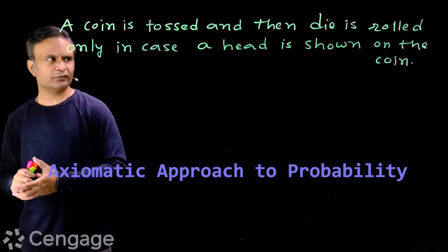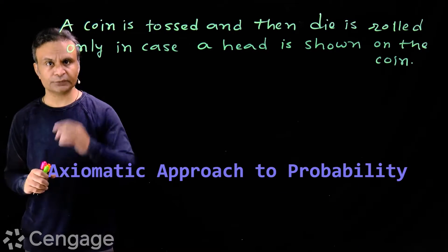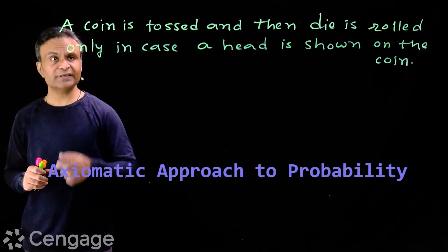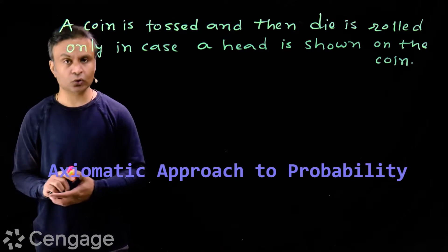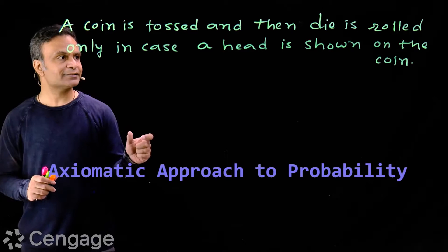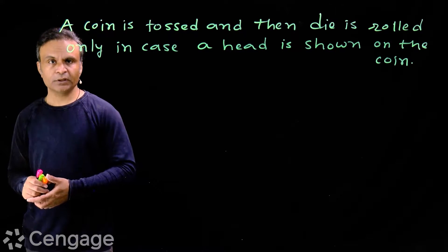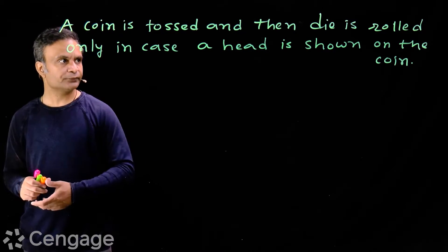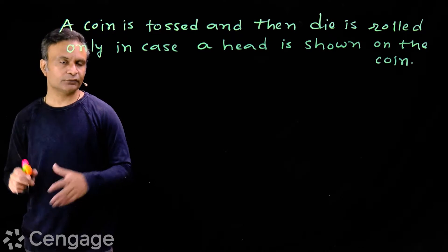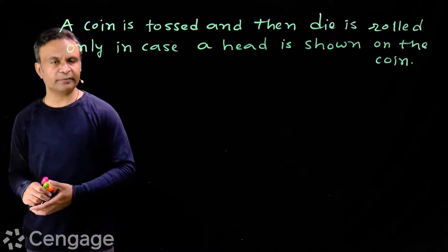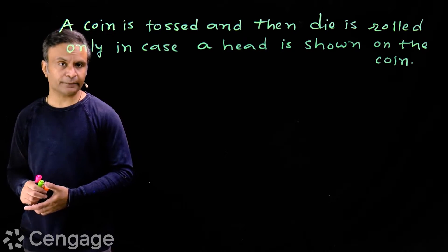We have this very interesting and fundamental question. A coin is tossed and then a die is rolled only in case a head is shown on the coin. So first we are tossing a coin — if it is tail, we stop the experiment, and if it is head, then we are rolling a die.